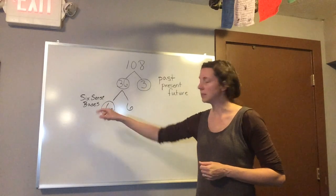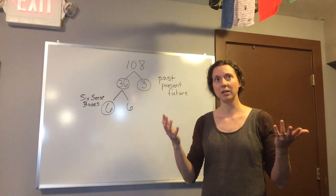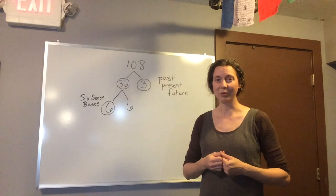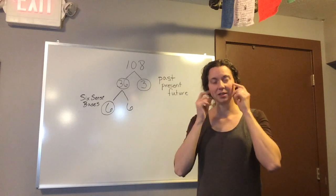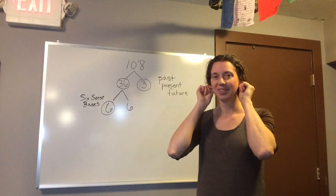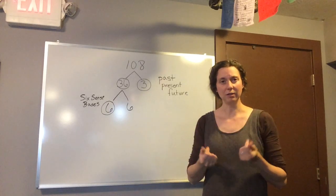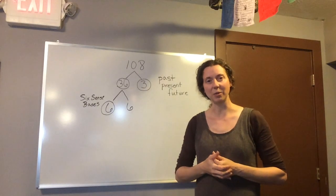So the 6 sense spaces are how we gather information from the world around us. What we see, what we hear, what we smell, what we taste, what we feel, and the thoughts that we have.